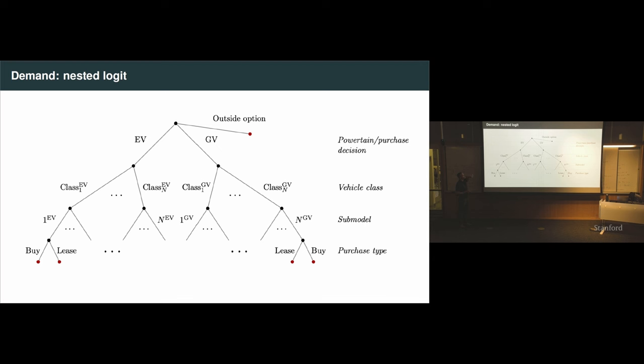The short version is we're going to assume that all the manufacturers sell vehicles in a Bertrand Nash equilibrium. So they set prices to maximize profits in equilibrium, so their prices are best responding to the vector of prices charged by all other vehicles. On the demand side, we're going to do a relatively simple nested logit demand system. Consumers decide, do they want an electric vehicle or a gasoline vehicle or maybe no vehicle at all? And these are going to be two different nests.